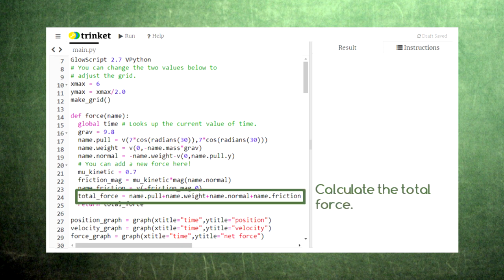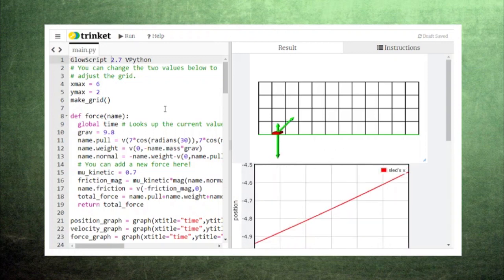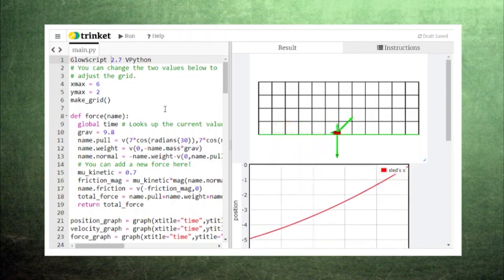After gathering all these forces, we're ready to add them all together to make the total force vector acting on the cart. As expected, the total force points to the right and our sled accelerates in the forward direction.